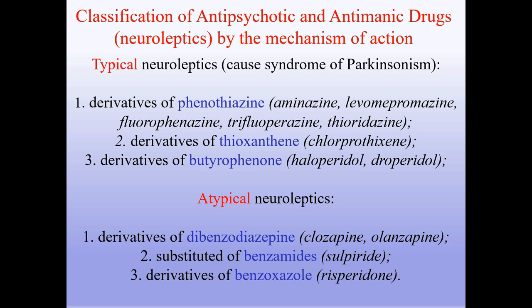Classification by mechanism of action. Typical neuroleptics cause Parkinson's syndrome: derivatives of phenothiazine (aminazine, levomepromazine, fluphenazine, trifluperazine, thioridazine), derivatives of thioxanthene (chlorprothixene), and derivatives of butyrophenone (haloperidol, droperidol). Atypical neuroleptics include: derivatives of dibenzodiazepine (clozapine, olanzapine), substituted benzamides (sulpiride), and derivatives of benzisoxazole (risperidone).